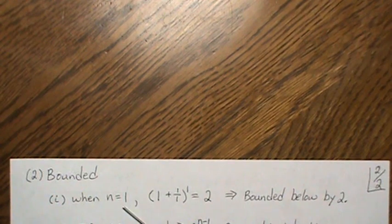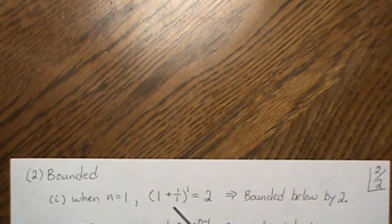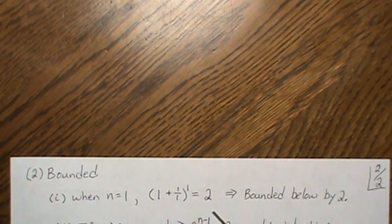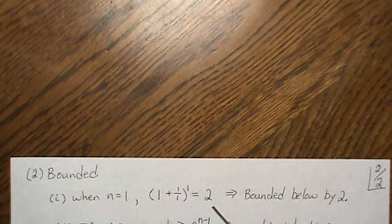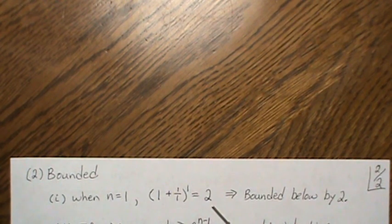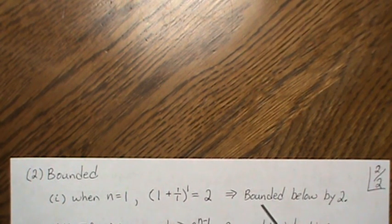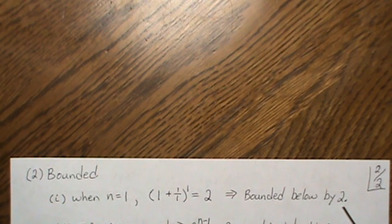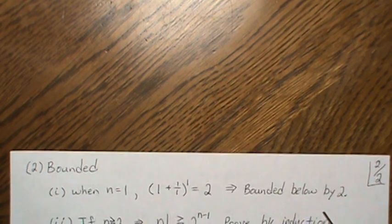Now let's prove the sequence is bounded. When n equals 1 the sequence starts at 2, and since it's monotone increasing it never goes below 2. So the sequence is bounded below by 2 — that's the easy part.